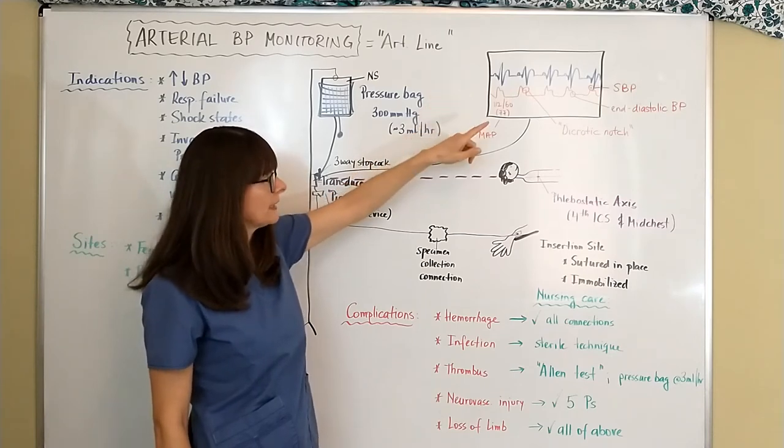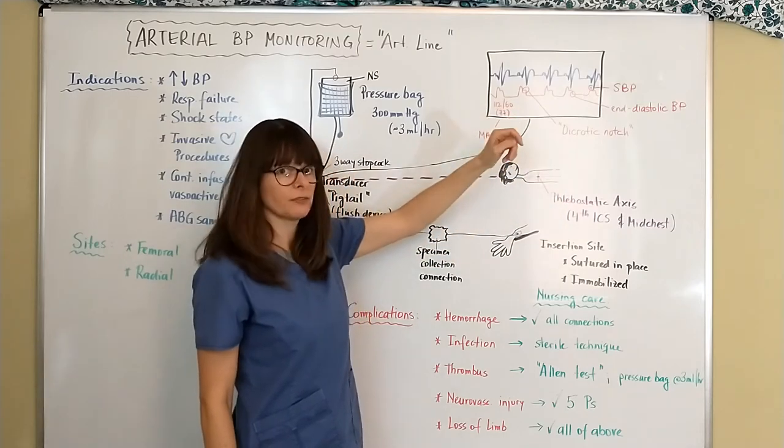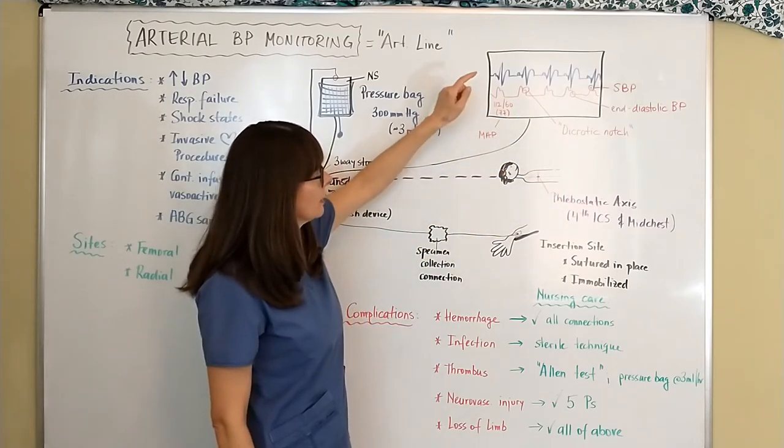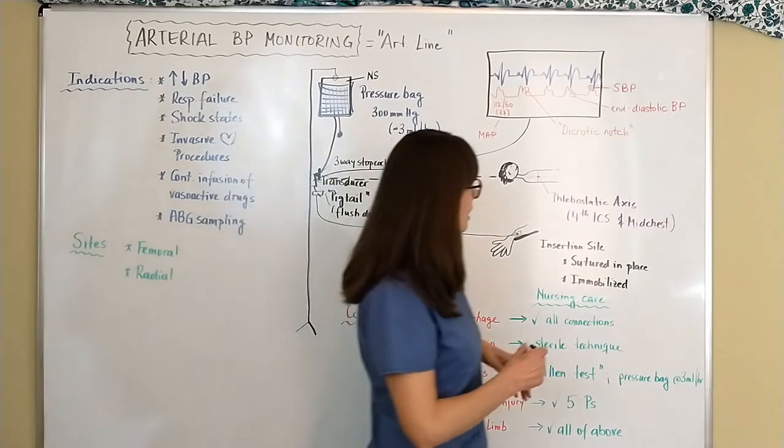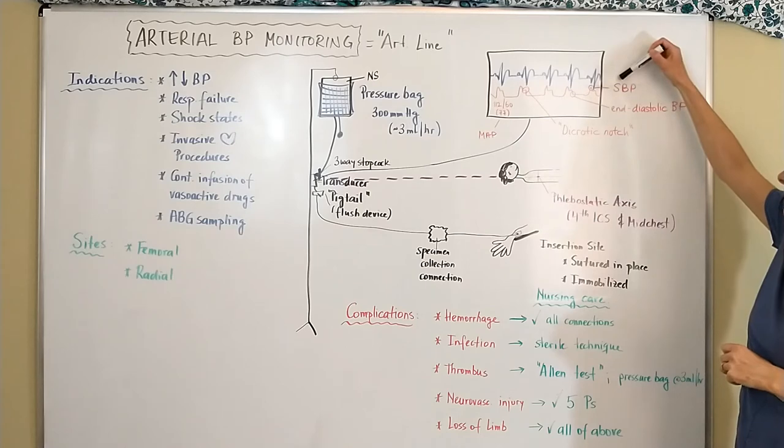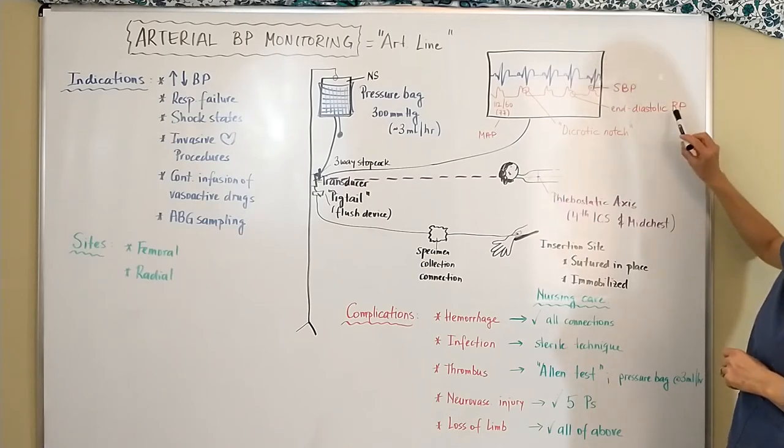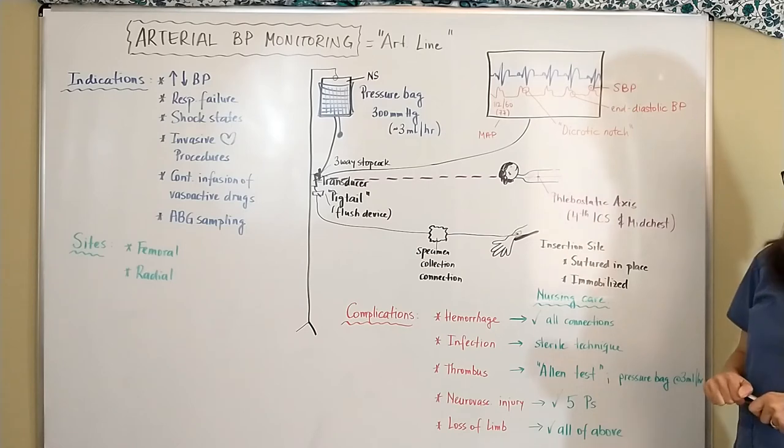And then these lines here on the output of the arterial line, we talked about the dicrotic notch and then up here the very tip of this waveform is the patient's systolic blood pressure and the very bottom of it is the end diastolic blood pressure that we can measure.